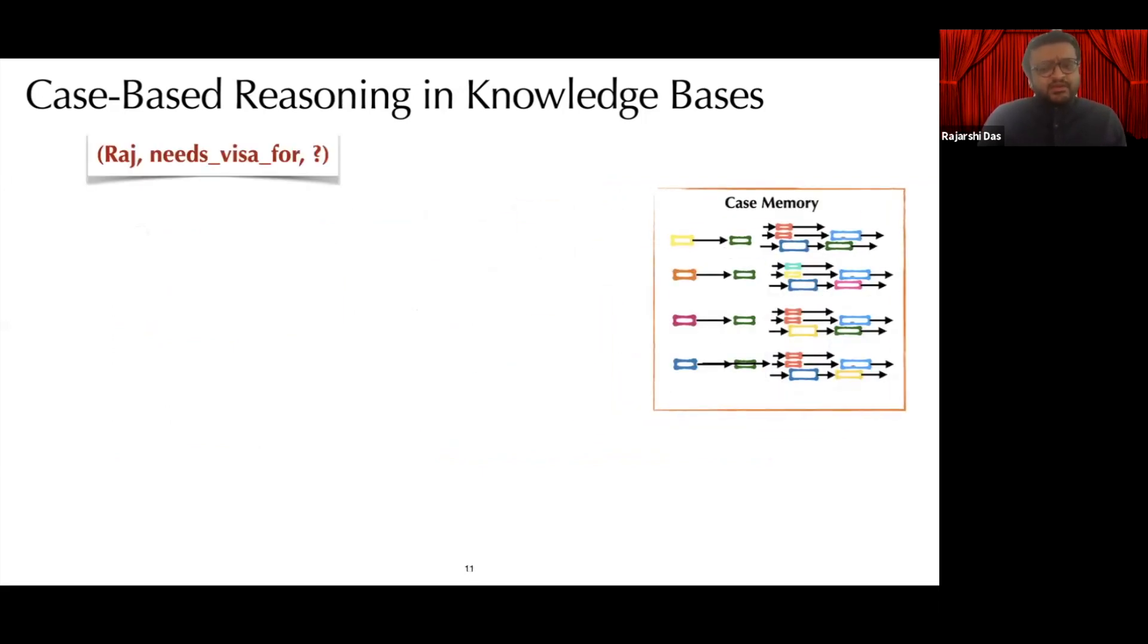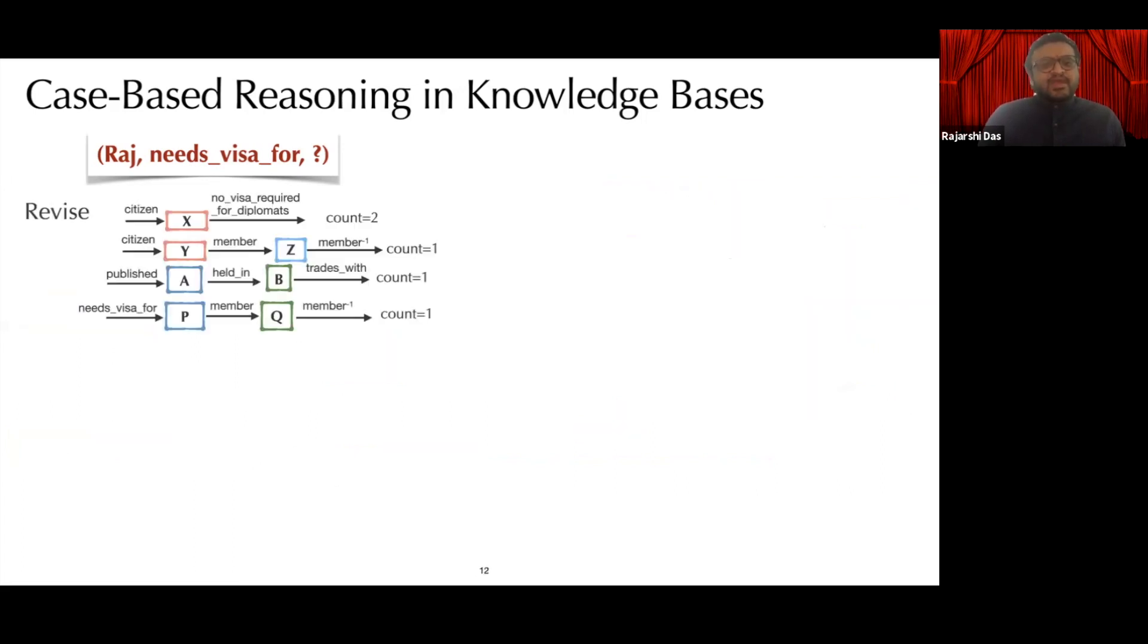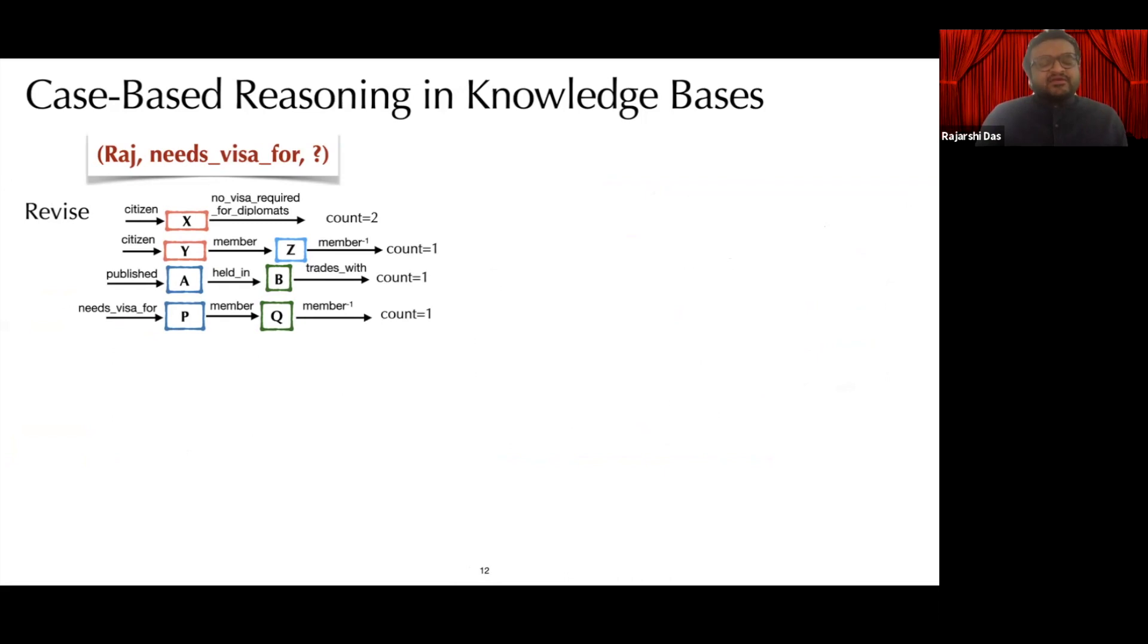Now, for a new query, we retrieve K relevant cases from memory. This is followed by gathering the paths from those cases and then removing the entities so that these paths are now just a sequence of relation types. This is followed by sorting them with respect to frequency.